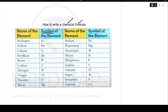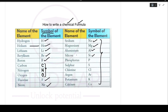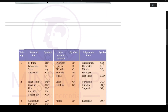To write a chemical formula, you should know the symbols of the elements. Hydrogen is H, helium is He, lithium Li, beryllium Be, boron B, carbon C, nitrogen N, and oxygen O. These should be familiar from your lower classes. Fluorine F, neon Ne, sodium Na, magnesium Mg, silicon Si, aluminium Al, and so on — all these symbols will help you write a chemical formula.